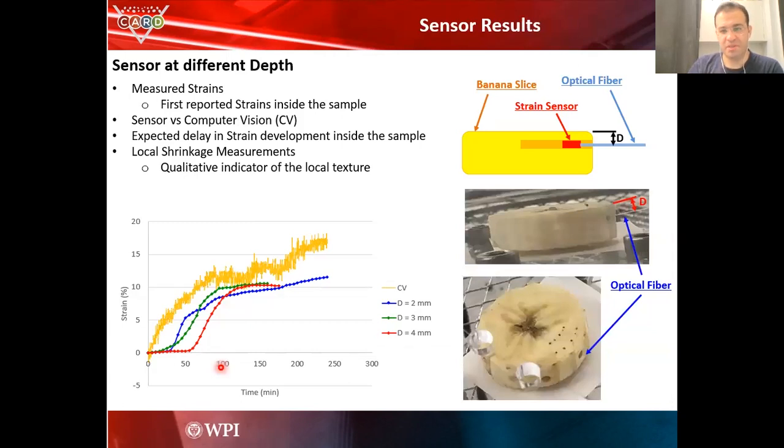Here we have some results. What we did in this test, you can see that this is a banana slice. We made a hole first inside the banana slice, then we inserted our sensor inside into the banana slice. You can see here the banana, and this is the optical fiber that is connected to the sensor. So we inserted the sensor inside the banana slice.